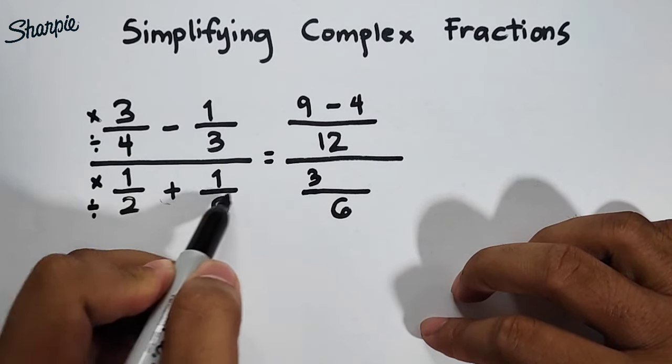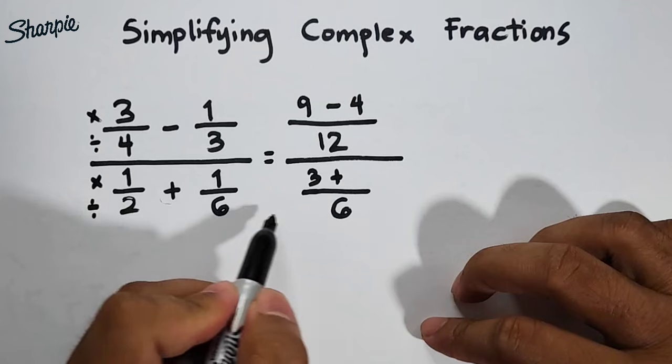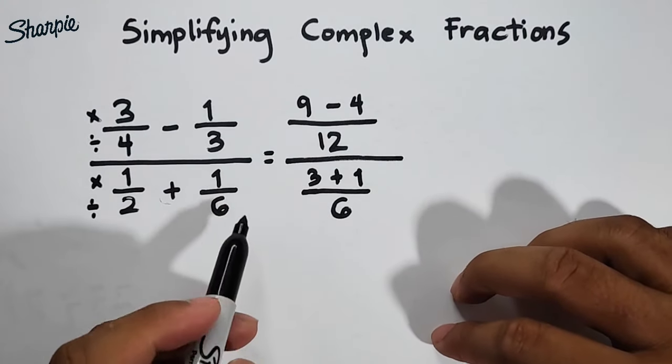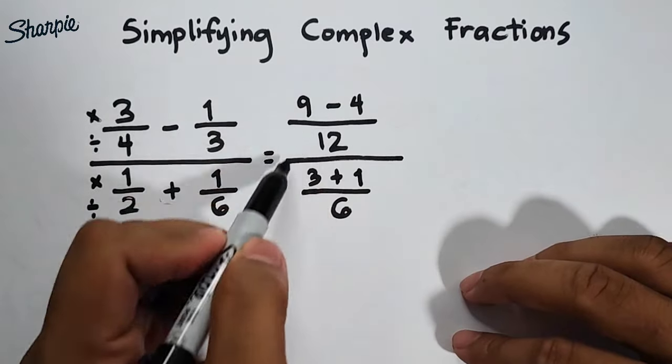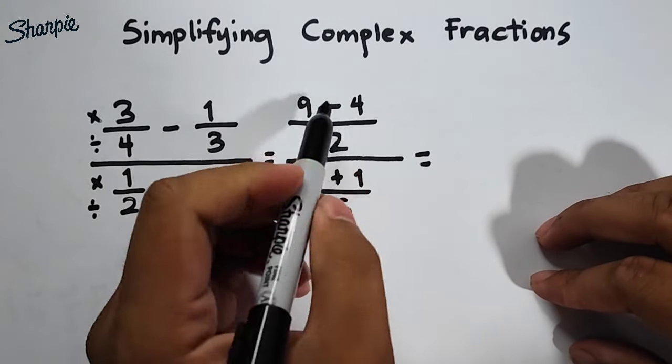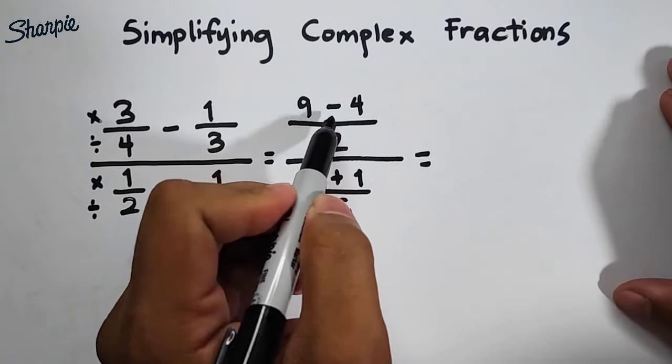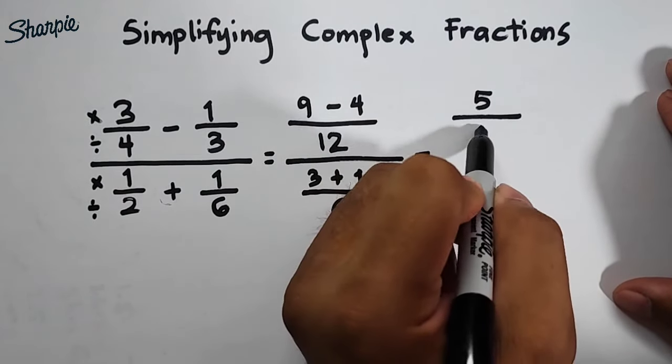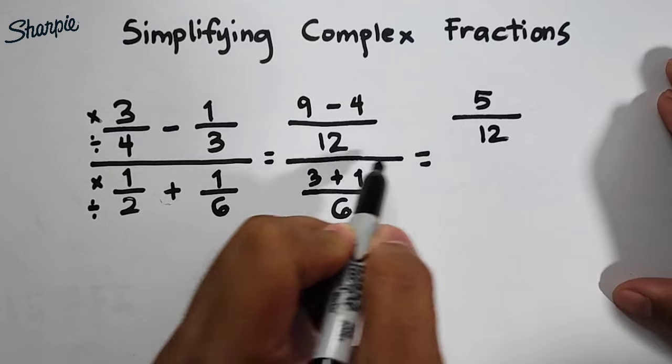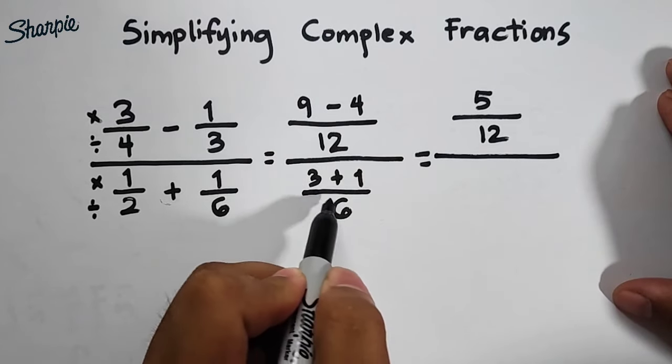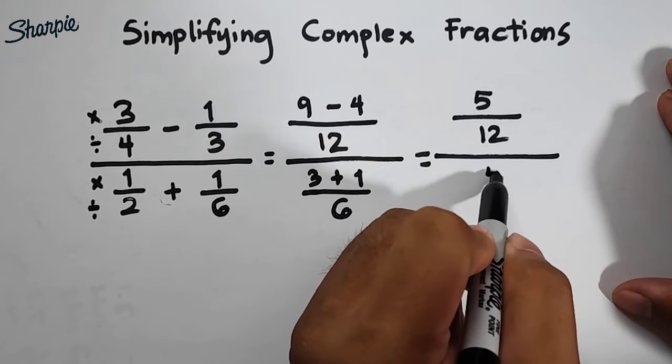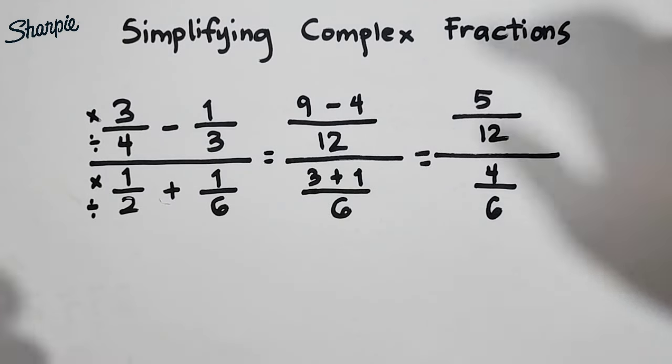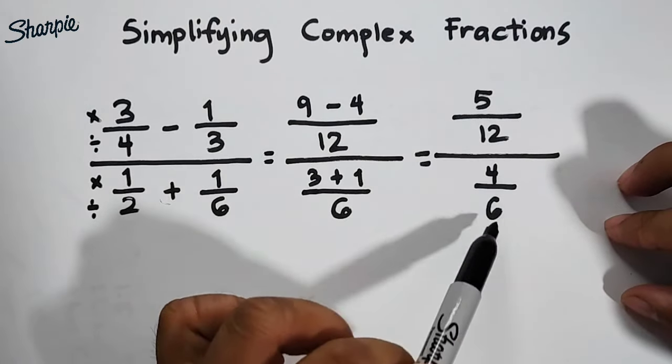Then copy this operation plus 6 divided by 6 is equal to 1 times 1, that is simply 1. So all we need to do for this part is to simplify their numerators. 9 minus 4 is equal to 5 over 12. And then originally, all over 3 plus 1, which is 4, over 6.